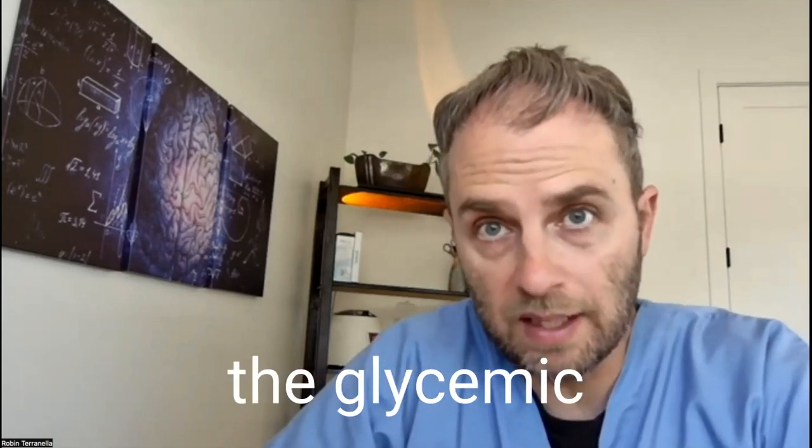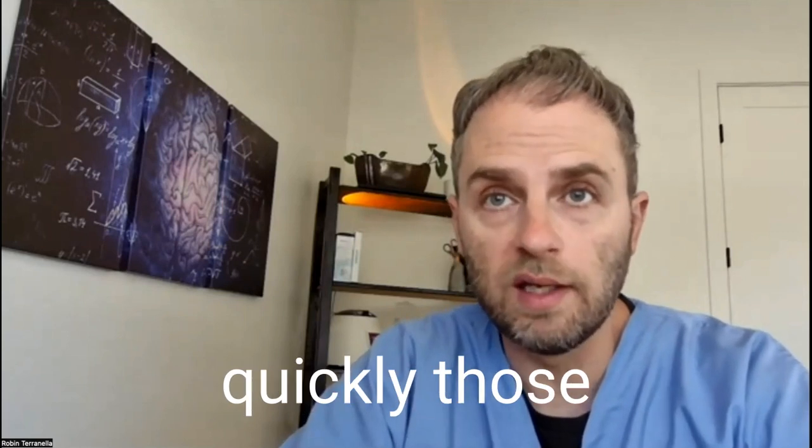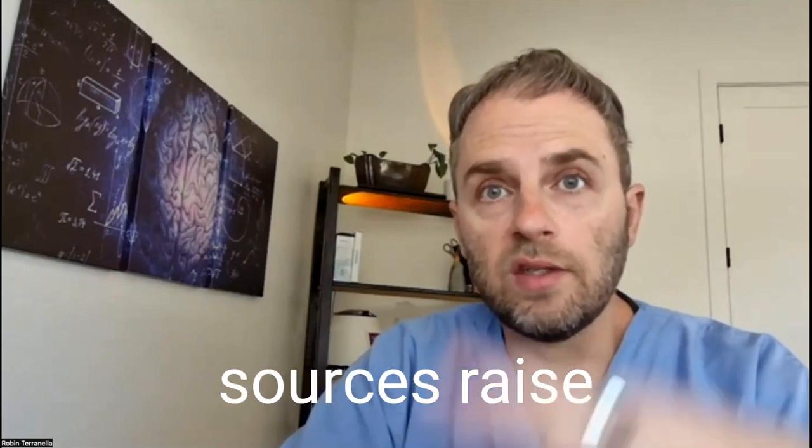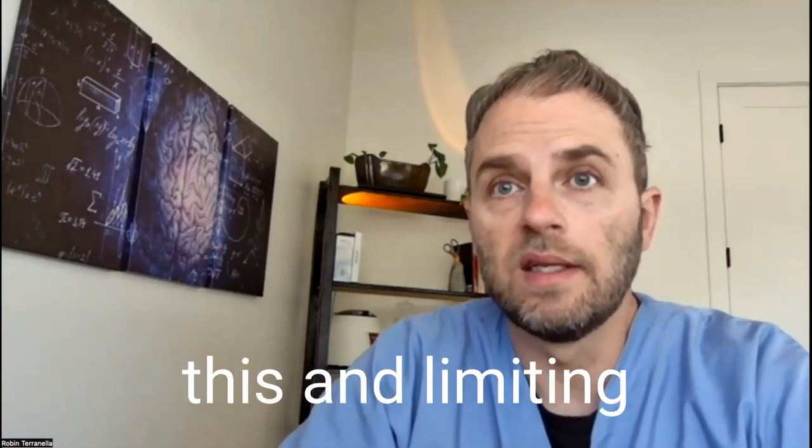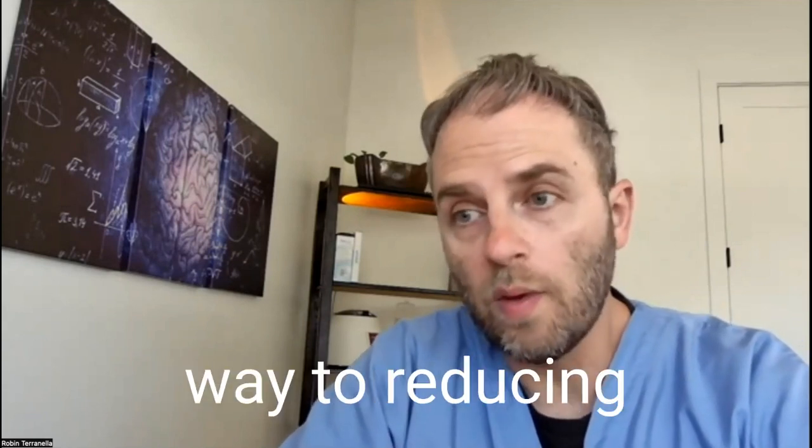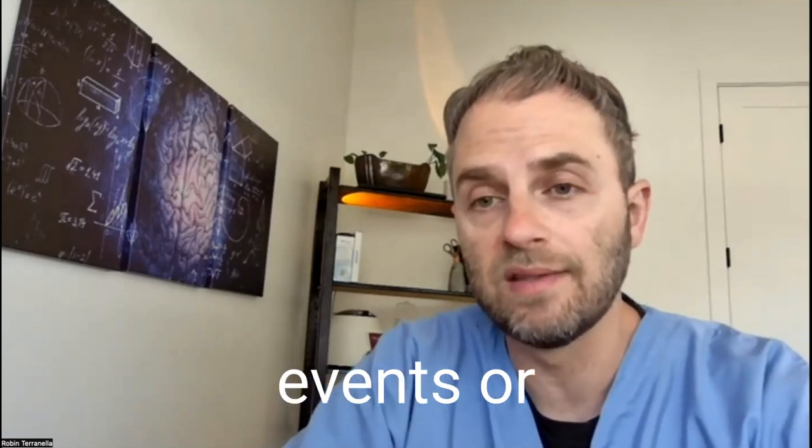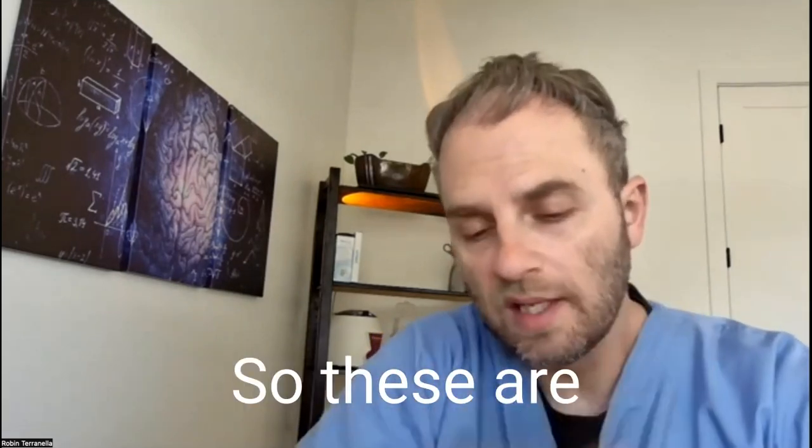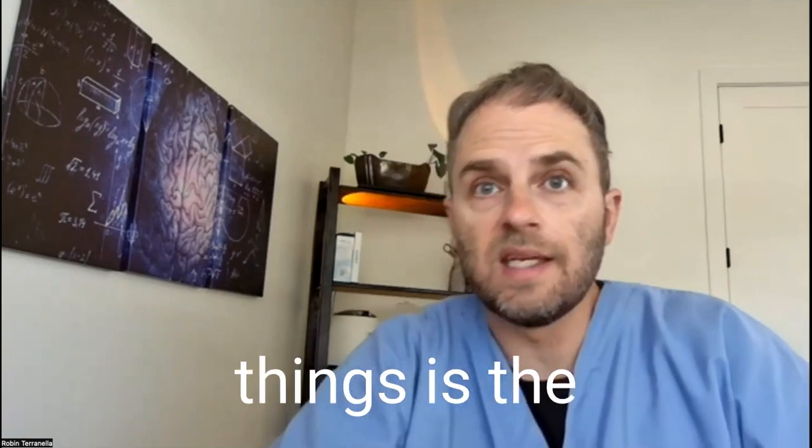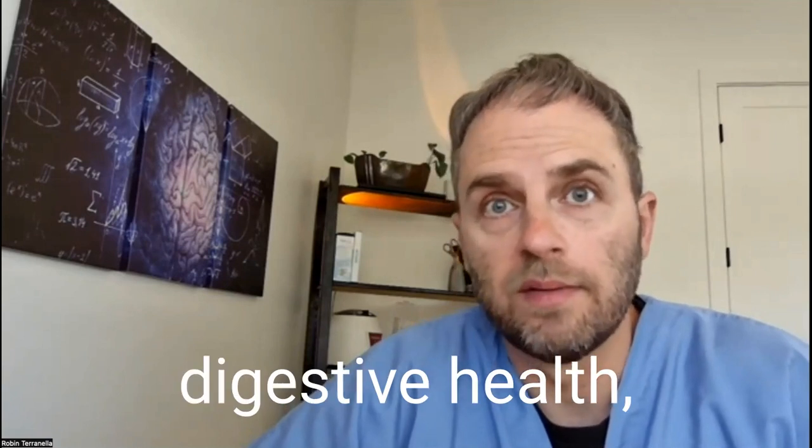So there's something referred to as the glycemic index of foods, which measures and categorizes how quickly those carbohydrate sources raise your blood sugar. Taking a look at this and limiting the high glycemic index foods will go a long way to reducing these reactive hypoglycemic events or hypoglycemia in general. So these are important. Other less obvious things is the depth and the amount of sleep that you're getting each night and your overall digestive health.